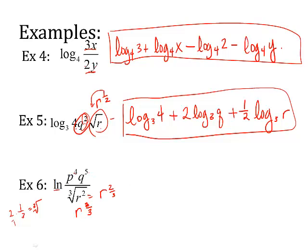So I'm going to use power rule and product rule. So I would say 4 times the natural log of p plus 5 times the natural log of q minus, remember the power, remove the power up front, 2 thirds the natural log of r.